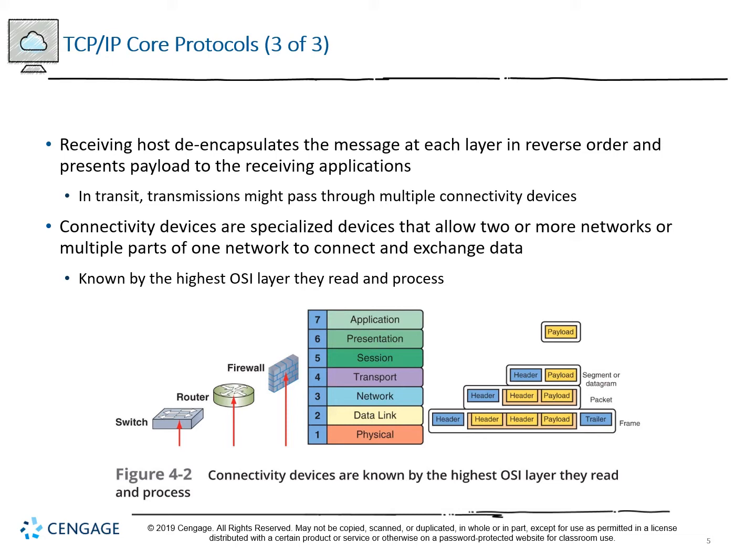The PDU will be arriving at a switch, router, or multifunction device. As it arrives, the header and trailer of the frame — and possibly even the header of the packet — will be peeled off and replaced as it transitions from one point to the next. These devices are traditionally known by the highest OSI layer they can read and process. A switch is traditionally Layer 2, but a Layer 3 switch operates in some capacities as a simplified router.